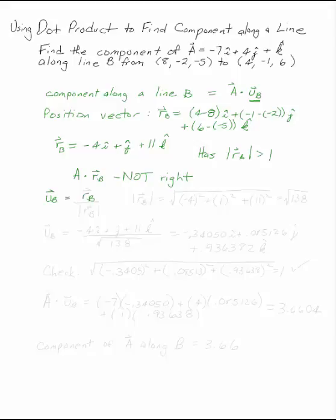So we want to take RB and divide it by its own magnitude to find a unit vector. That way when we take the dot product, we haven't increased the magnitude of A.